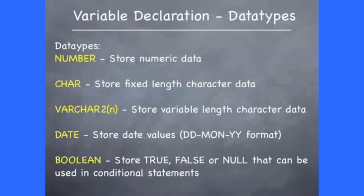Every variable that you declare must have a data type associated with it that will identify the type of value that the variable can store. The possible data types are: number, which can store numeric data; and char, which is fixed-length character data. If you don't specify a size for a variable defined to be of char type, then the default size of the variable will be a single character.